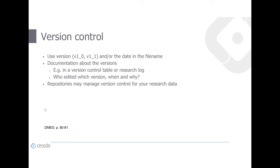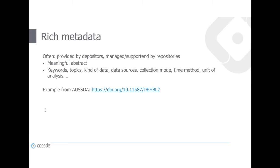Repositories often support you in these steps by managing version control for your published research data. Metadata is another important aspect of findability. Metadata are data that describe your data — aspects like keywords, topics, kind of data, data sources, collection mode, time method, and unit of analysis. Here you can find a link to an example from the AUSTER Dataverse where you can scroll through the metadata and see what kinds are used to describe research data.